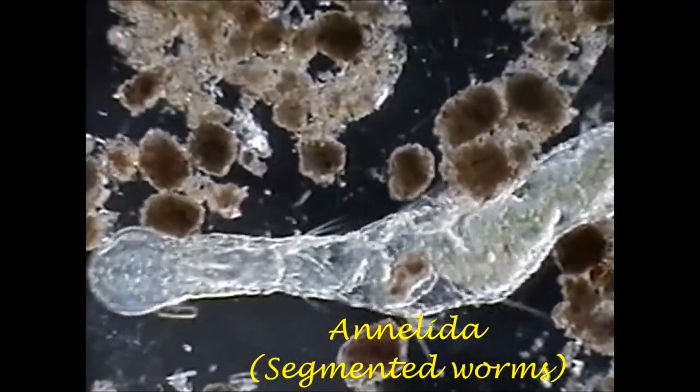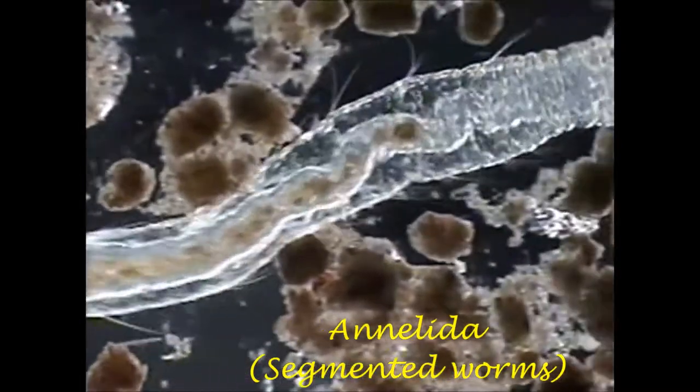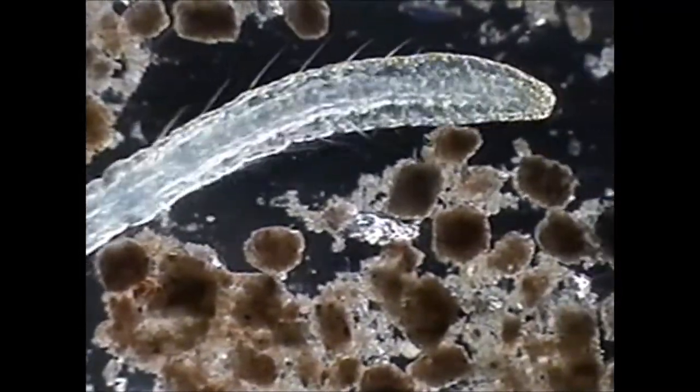Annelida, segmented worms. Over 22,000 species. Long, segmented bodies divided by ring-like constrictions.